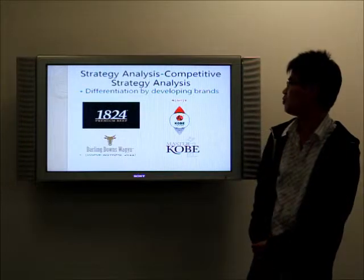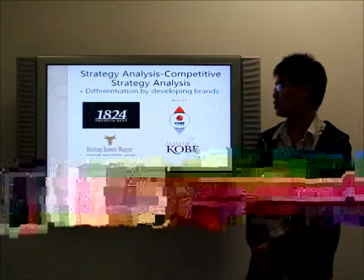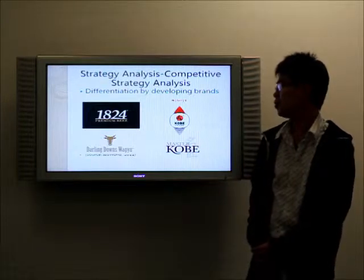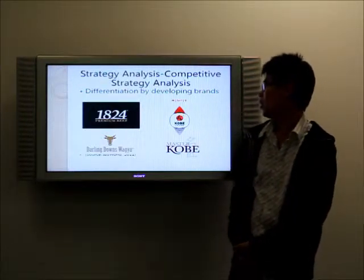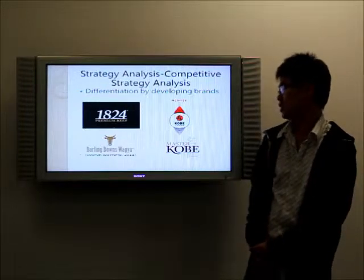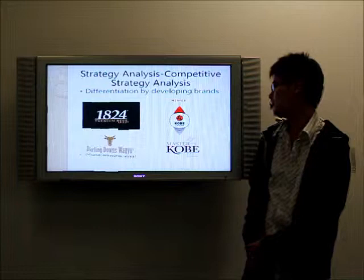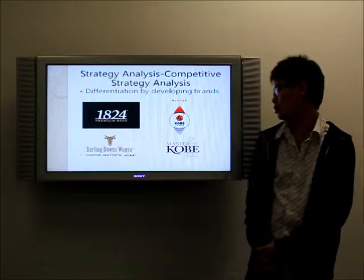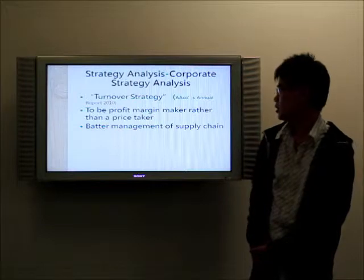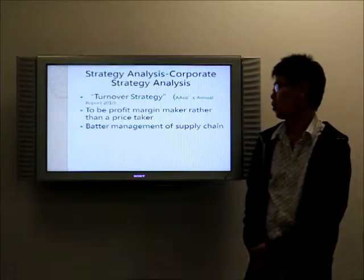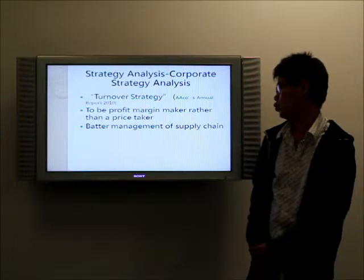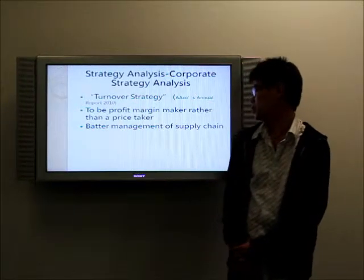In terms of competitive strategy, AACO adopts differentiation as its competitive strategy. It is defined by developing brands. It has created many brands such as 1824 Premium Beef, Kobe, Huizzen, Darling Don's Rebu, and Master Kobe. In terms of corporate strategy, AACO adopts a strategy called technology strategy, which means it tries to be a profit maker rather than a price taker through better management of the supply chain.